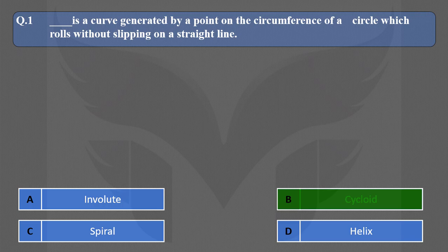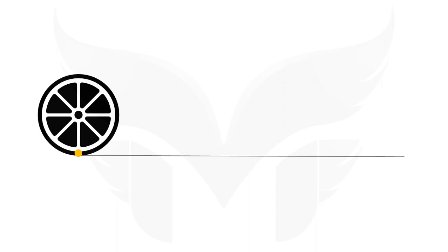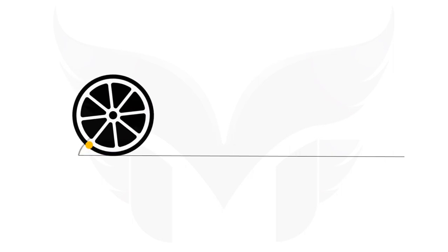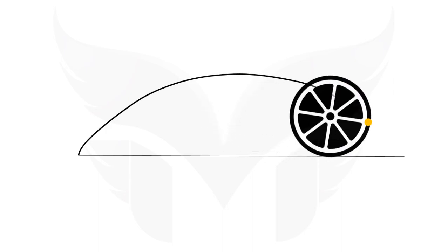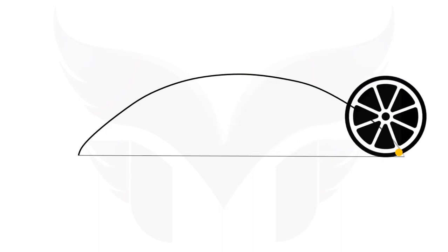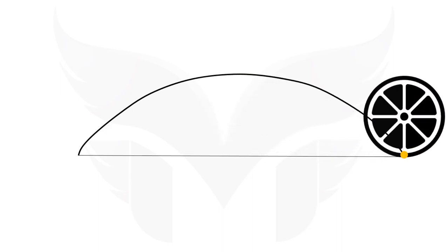Let's see how Cycloid looks like. Here we have a wheel and a point on the circumference of the wheel, shown in yellow color. When the wheel rolls on a straight horizontal road without slipping, the path traced out by that point will be a curve, and this curve is called a Cycloid.